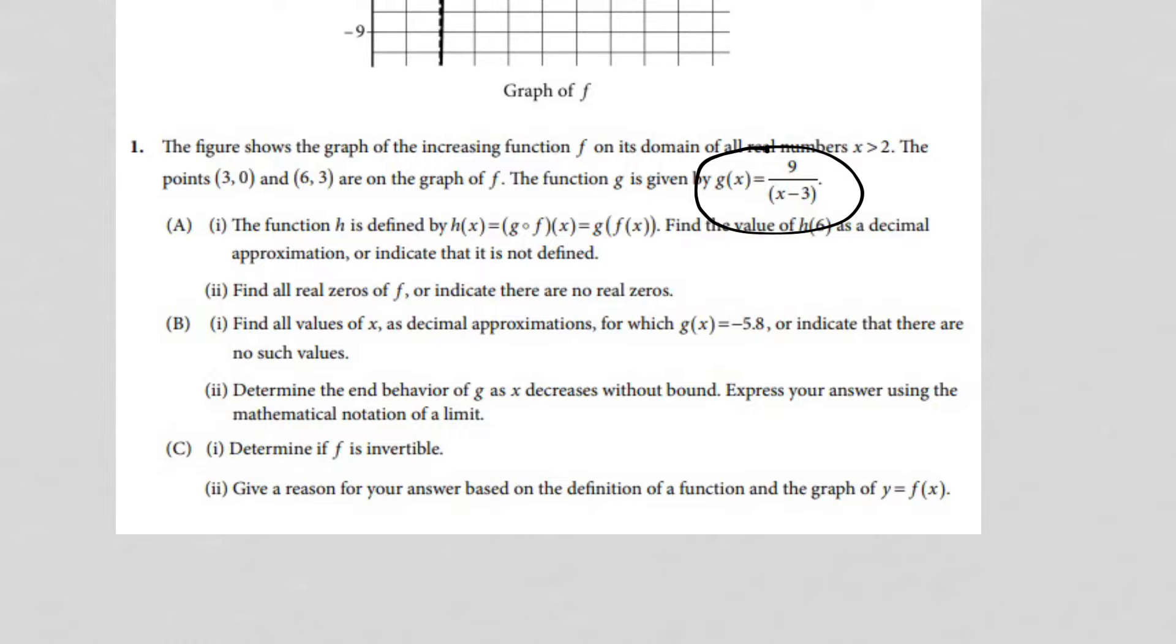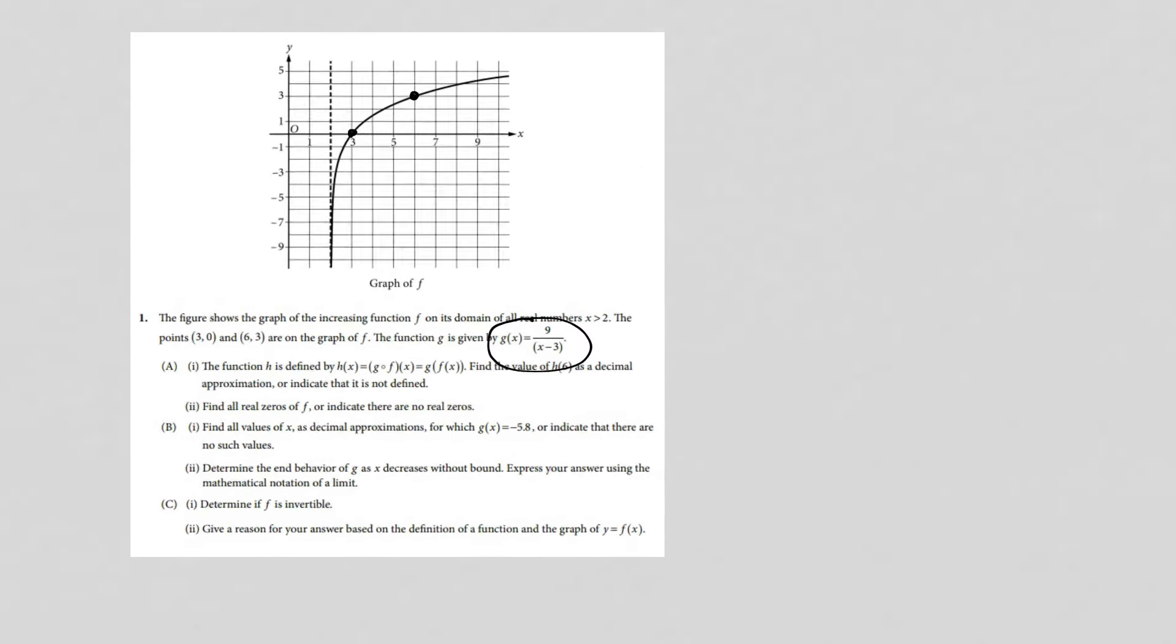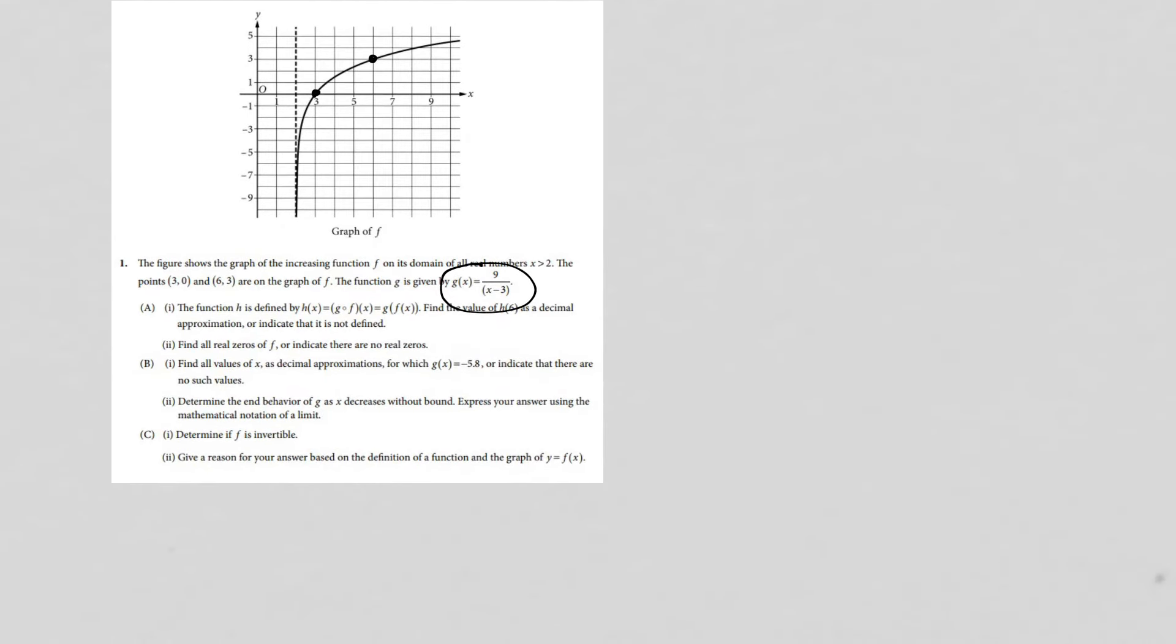Domain of all real numbers greater than two, and the points three zero and six three are on the graph. So we can three zero and six three. And there's no other really nice points on the graph. And now they have a second function, that one they don't show us a graph of, but they just tell us nine over X minus three. And now they start asking questions about it. So question A1, composite function.